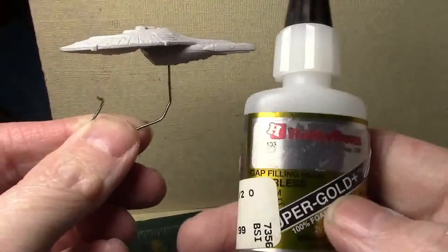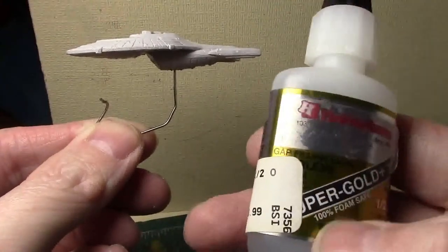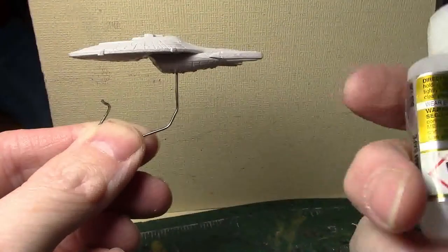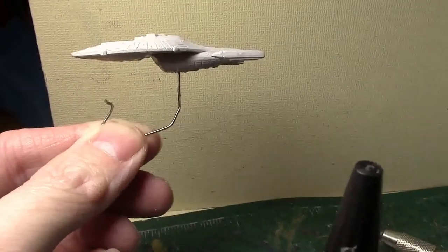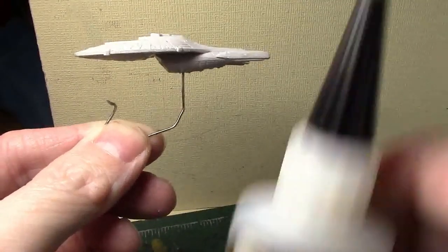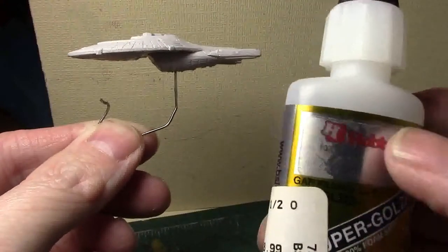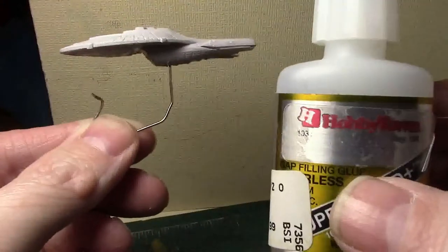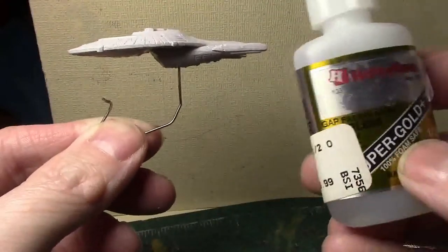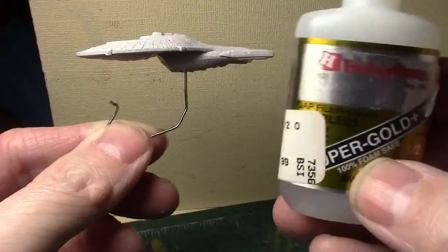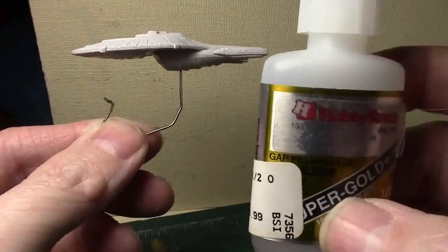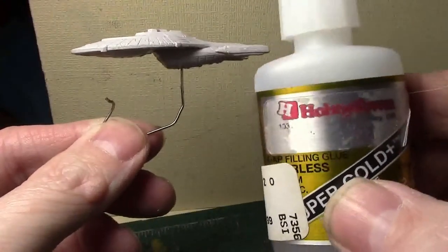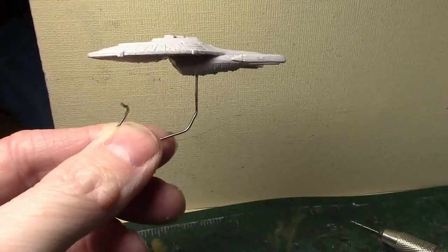For that, this is what I use. This is a Super Gold Plus from Bob Smith Industries, BSI. Generic super glue. It can be branded with any place you buy it, but this is made by Bob Smith Industries. The Super Gold Plus is 100% foam safe and is also clear plastic safe. You can actually glue on canopies with this. It does not fog them up. This is absolutely amazing super glue, but it's also like $9 for this bottle. You get what you pay for though in this for sure.